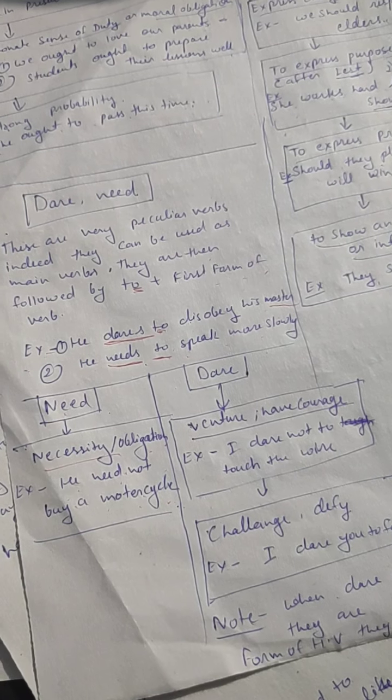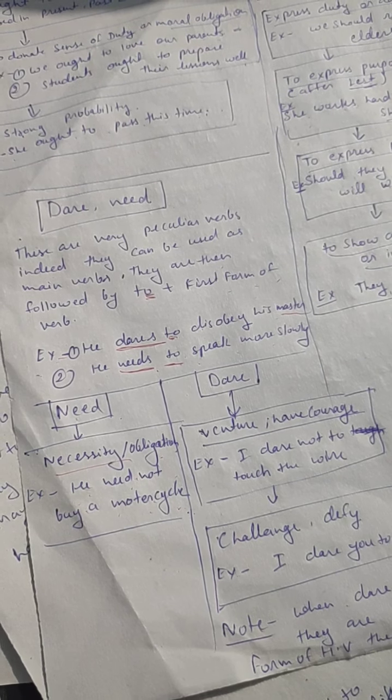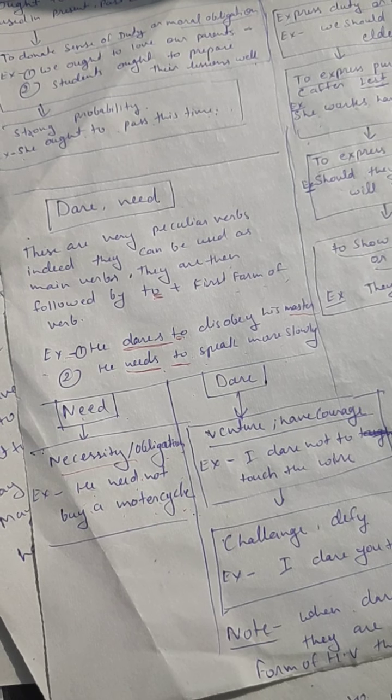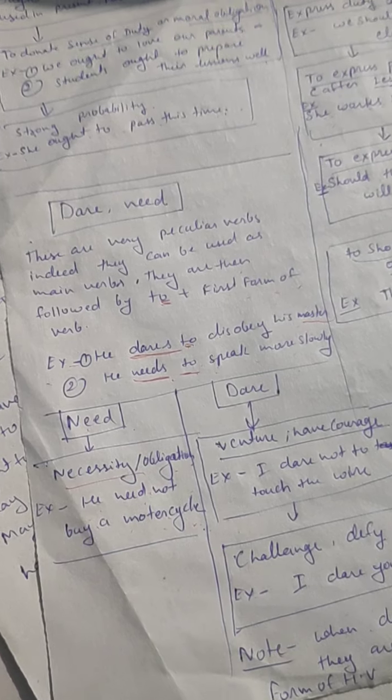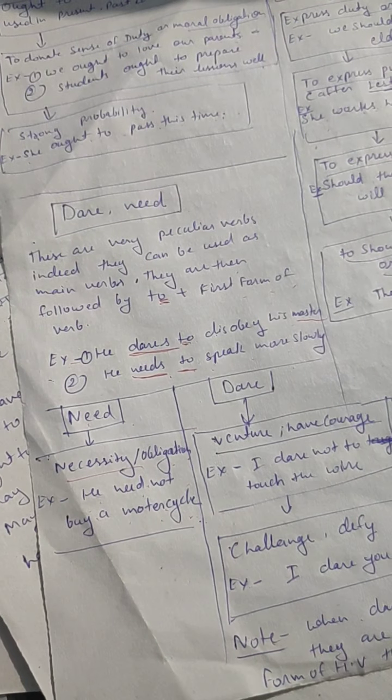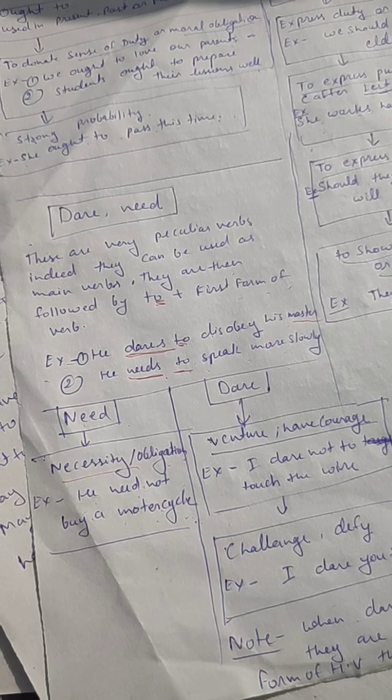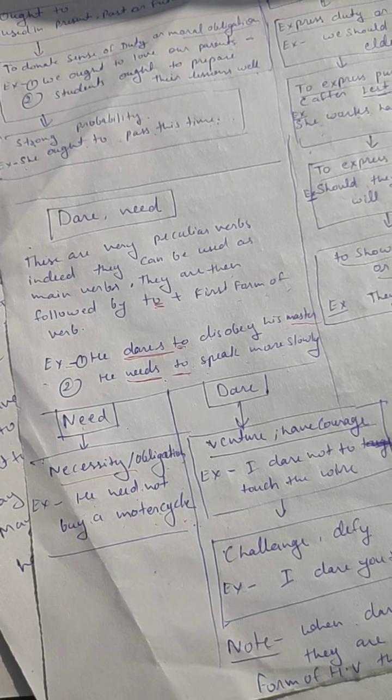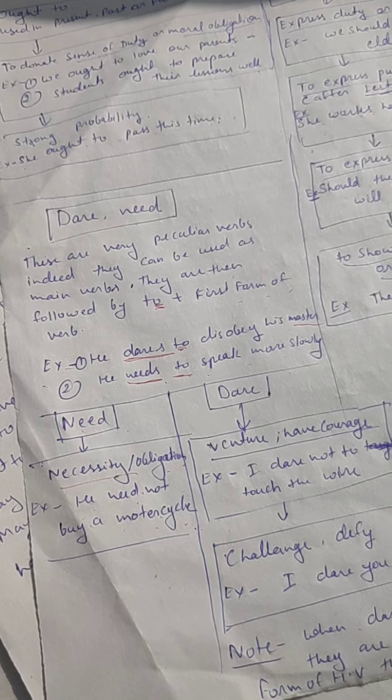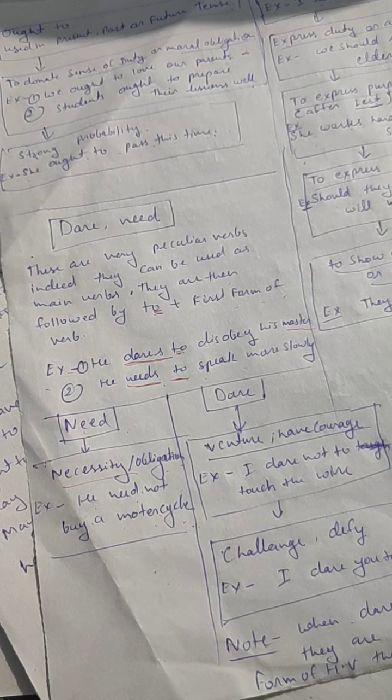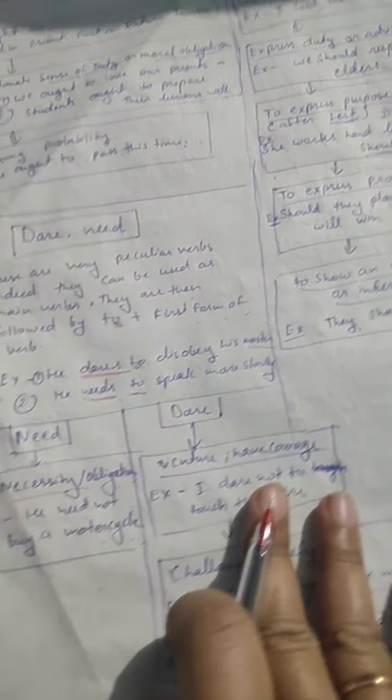I want to tell you one thing - when need and dare are used as helping verbs, we will not use 'to' with them. So you should remember, 'to' is always used when they are used as main verbs. As helping verbs, we will not use 'to'.